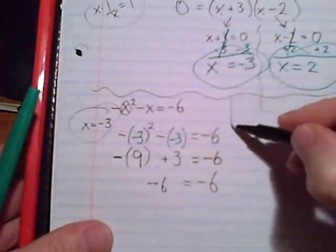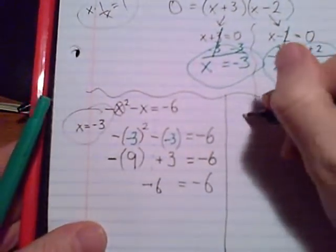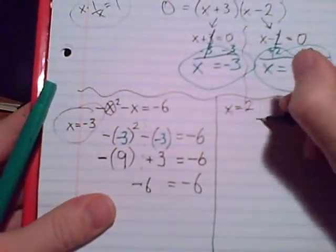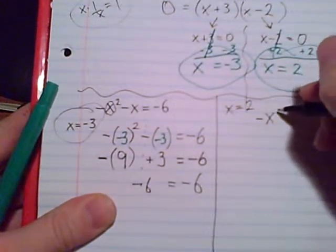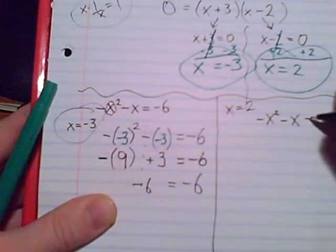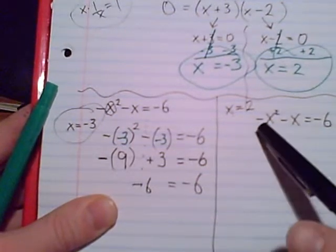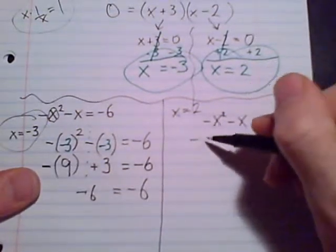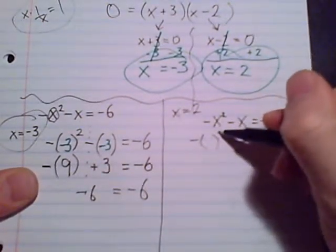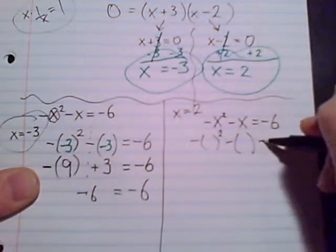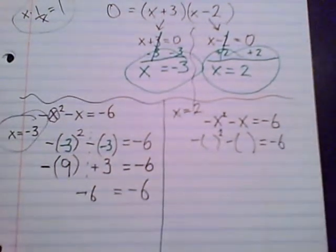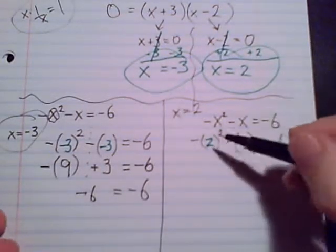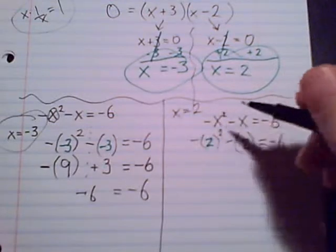But we knew it would check out. X equals two, let's check that one. Not as bad with the signs, plugging in a positive number. Still just gonna be cautious. I don't know, something about that negative sign. Negative open parentheses for that number x, it's gonna be two, equals negative six. Let's toss in the two.